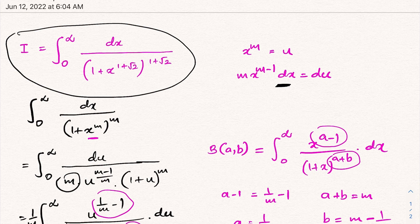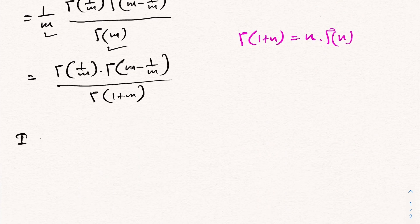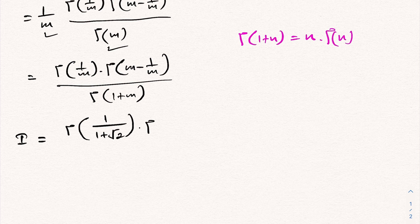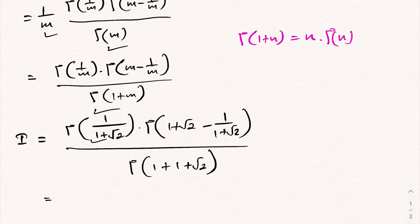Now we substitute the specific value m = 1 + √2. The integral I equals Γ(1/(1+√2)) · Γ((1+√2 − 1)/(1+√2)) / Γ(1 + (1+√2)). To simplify 1/(1+√2), we multiply numerator and denominator by (√2 − 1), giving √2 − 1.